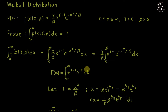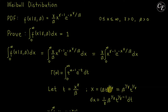Let us set t equal to x raised to gamma over beta. From this substitution, x equals beta times t raised to 1 over gamma, which distributes to beta raised to 1 over gamma times t raised to 1 over gamma. Then for dx, since the only variable is t, we get dx equals 1 over gamma times beta raised to 1 over gamma times t raised to 1 over gamma minus 1, dt.